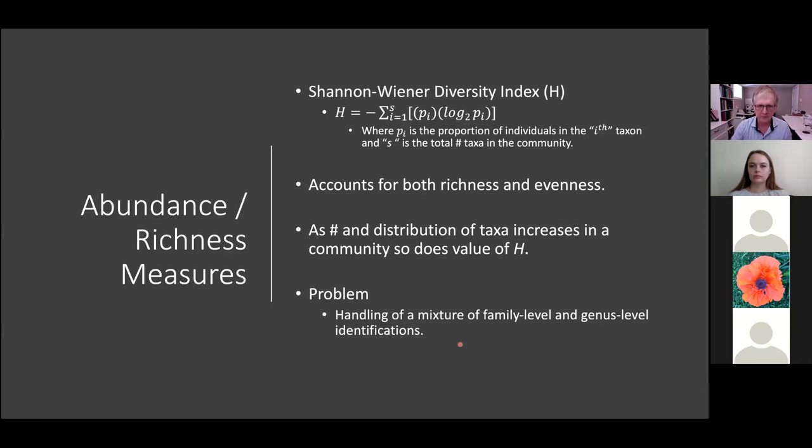So total number of organisms. McLeod Creek wasn't that great - look at that, it hardly has any organisms relative to Whitehorse. Solomon Creek and Greg River are about the same, but Whitehorse Creek buries everything. That's a huge difference in numbers. And again, it's a standardized sample by CABIN - three minutes, zigzag pattern, hitting all the habitats. That is a real difference.